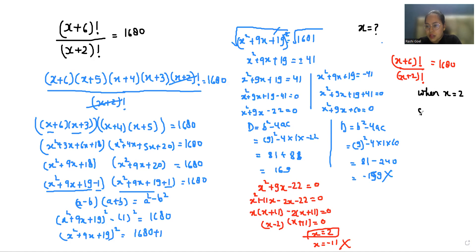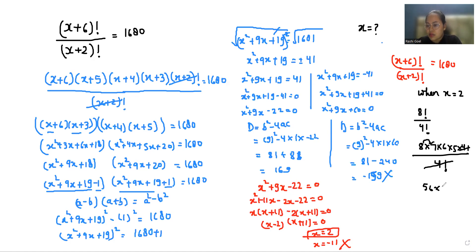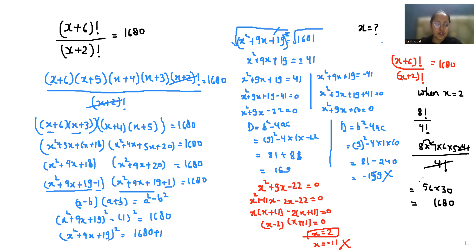Checking x equals 2: this gives 8 factorial by 4 factorial, which equals 8 times 7 times 6 times 5 times 4 factorial divided by 4 factorial. Canceling gives 8 times 7 times 6 times 5 equals 1680. This confirms x equals 2. I hope it's clear and you find it useful — please give a thumbs up and subscribe to my channel.